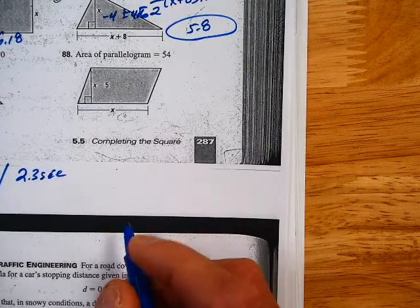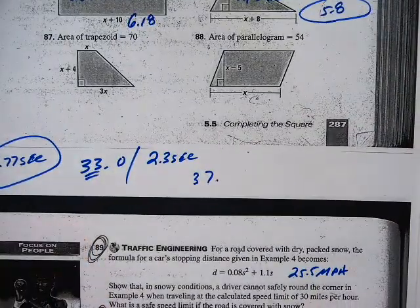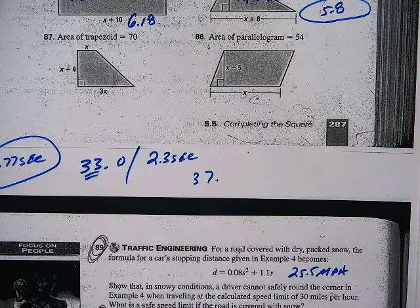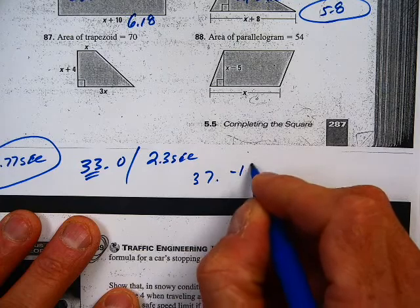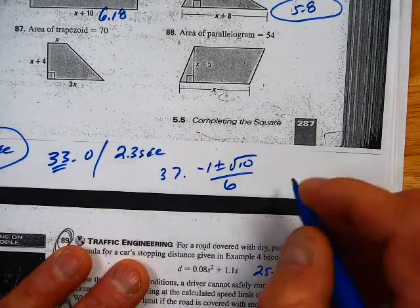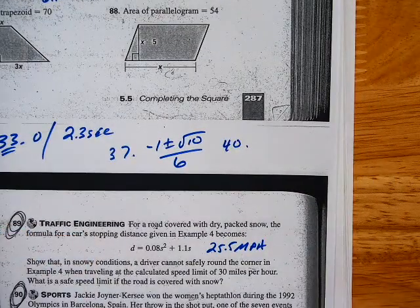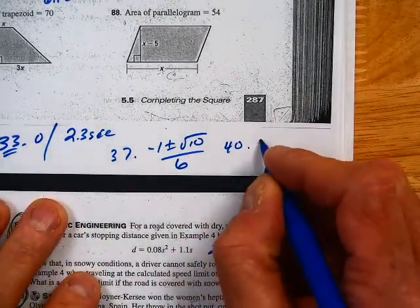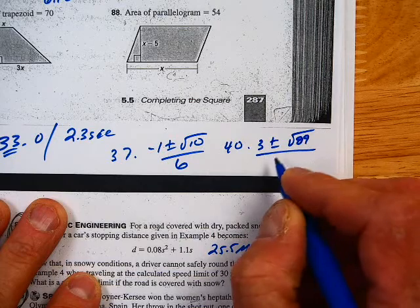And then we had 37 is negative 1 plus or minus square root of 10 all over 6. And then we had 40, 3 plus or minus square root of 89 all over 4.